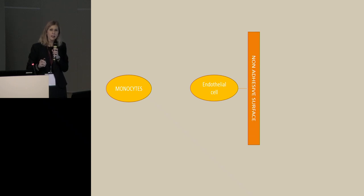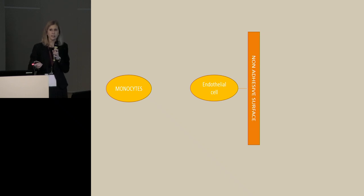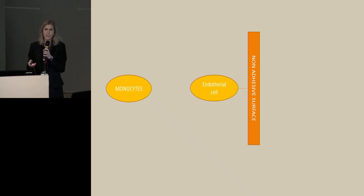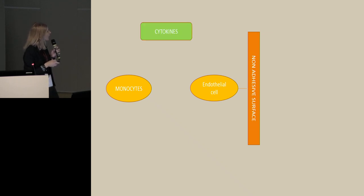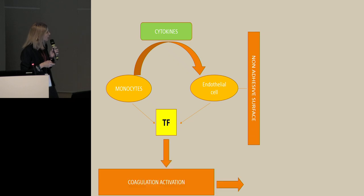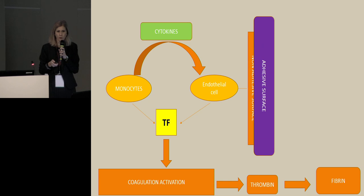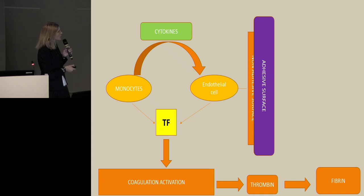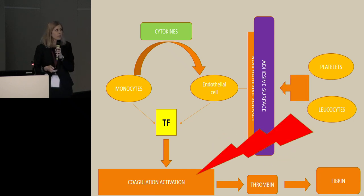Normally, cells that express tissue factor are not in contact with blood; they are found underneath the vascular wall and are only exposed to blood flow when there is a lesion. However, in sepsis or other high-inflammation states, under the effect of cytokines, circulating cells like monocytes and endothelial cells express tissue factor on their surface. This comes into contact with blood, leading to coagulation activation, thrombin generation, and fibrin formation.